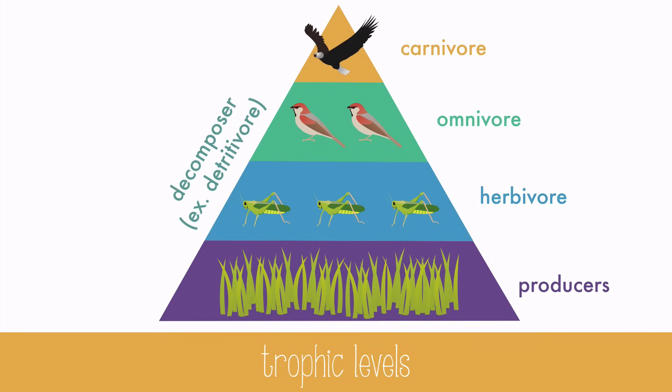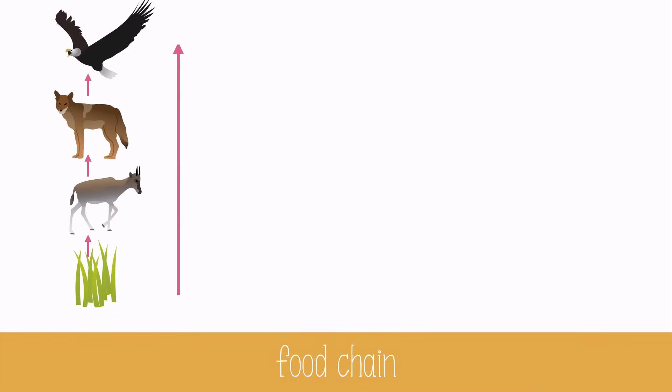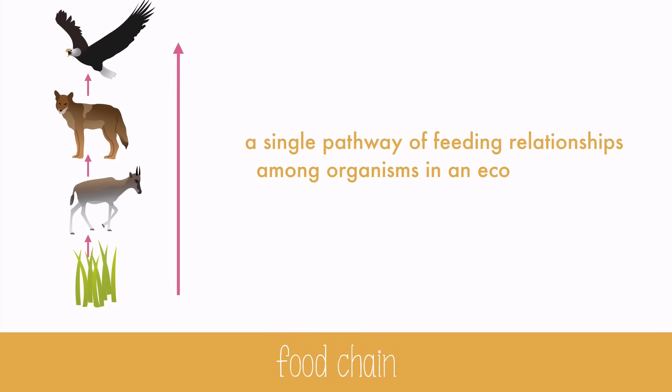Each trophic level on this pyramid indicates the organism's position in a sequence of energy transfers. Producers are at the bottom because they support all the levels above. They get their energy from the sun, and that energy gets transferred to the organisms that consume them. We can follow the energy transfer by looking at a food chain, which is a single pathway of feeding relationships among organisms in an ecosystem that results in energy transfer. Arrows are used to show the direction of energy transfer, so it goes from the food into the mouth of the eater.